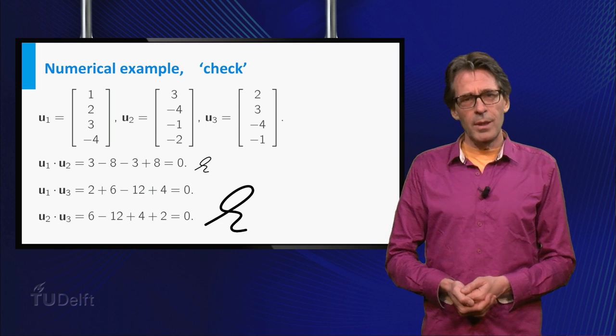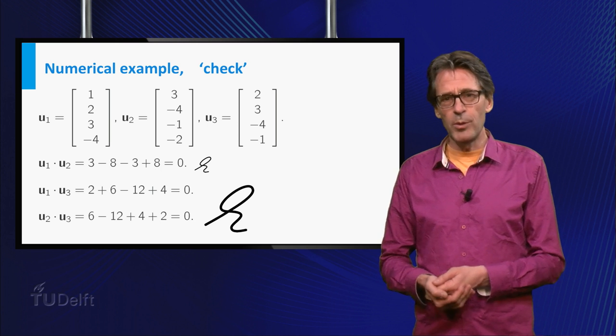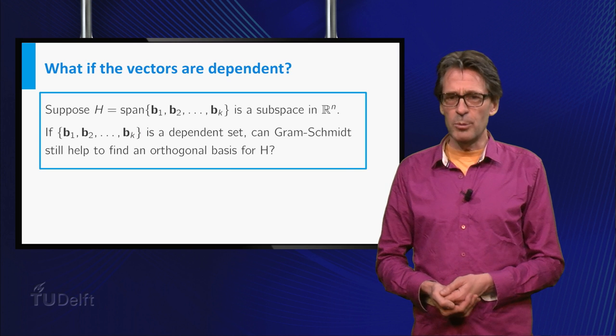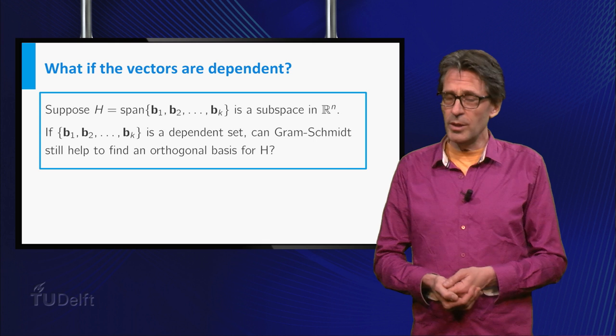In the example, as well as in the general construction, the given vectors b1 up to bk were independent. What would happen if a subspace h is the span of vectors bi, but the bi are not independent?